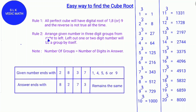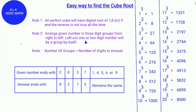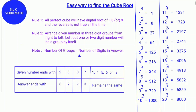Rule 2: Arrange the given number in three-digit groups from right to left. Any left-out one or two digit number will be a group by itself. Note: the number of groups equals the number of digits in the answer.